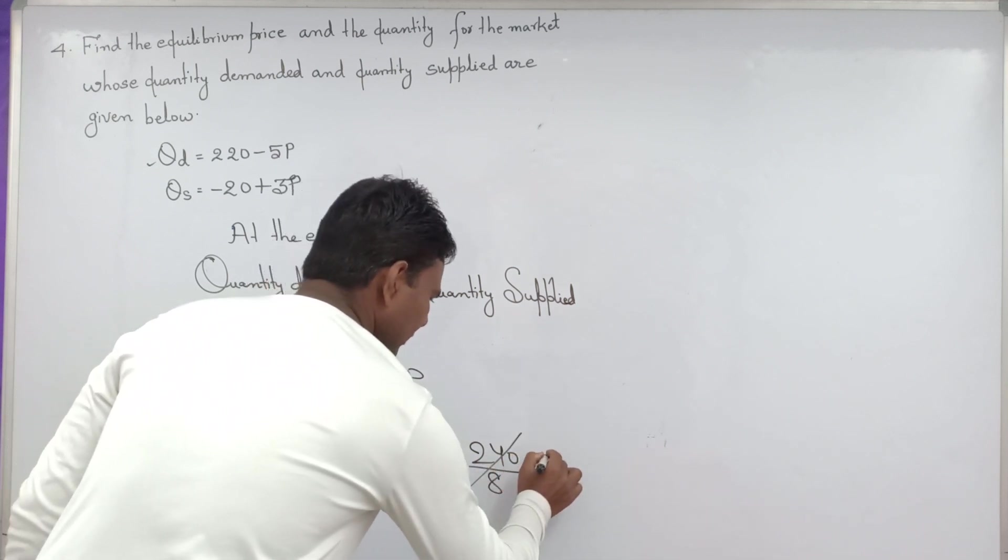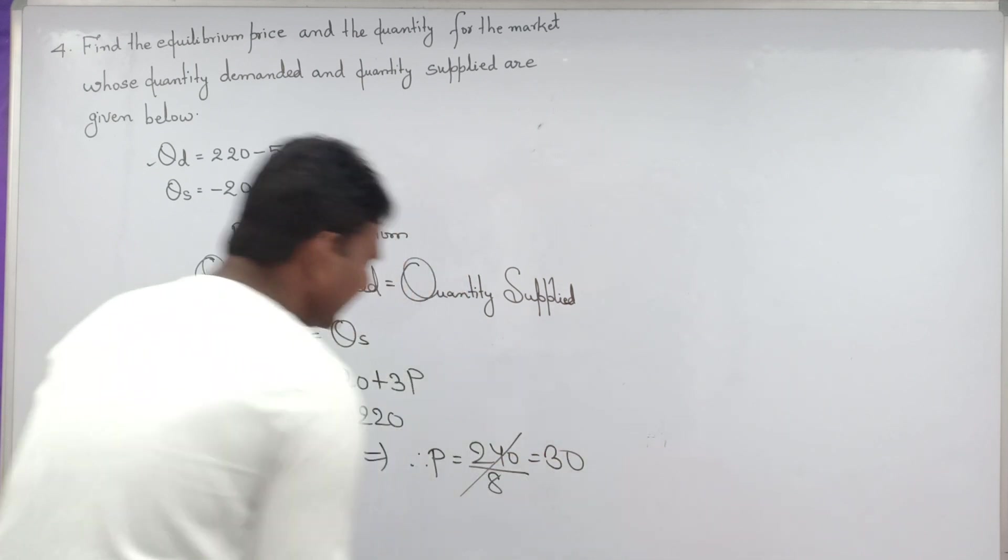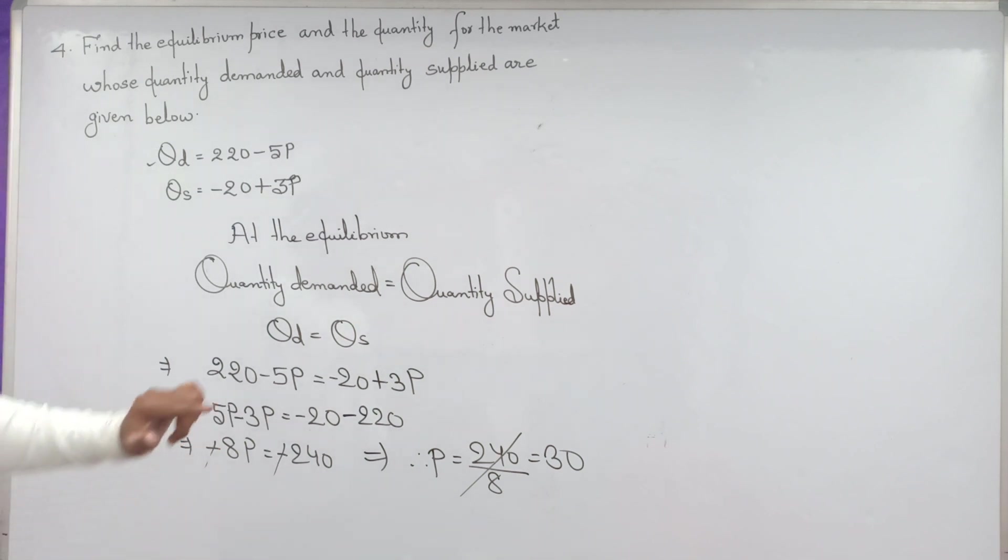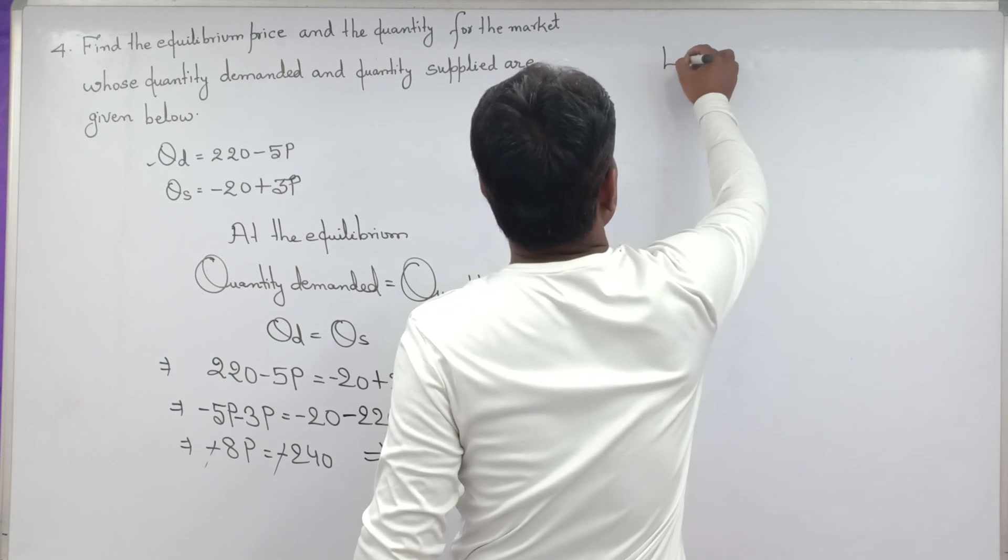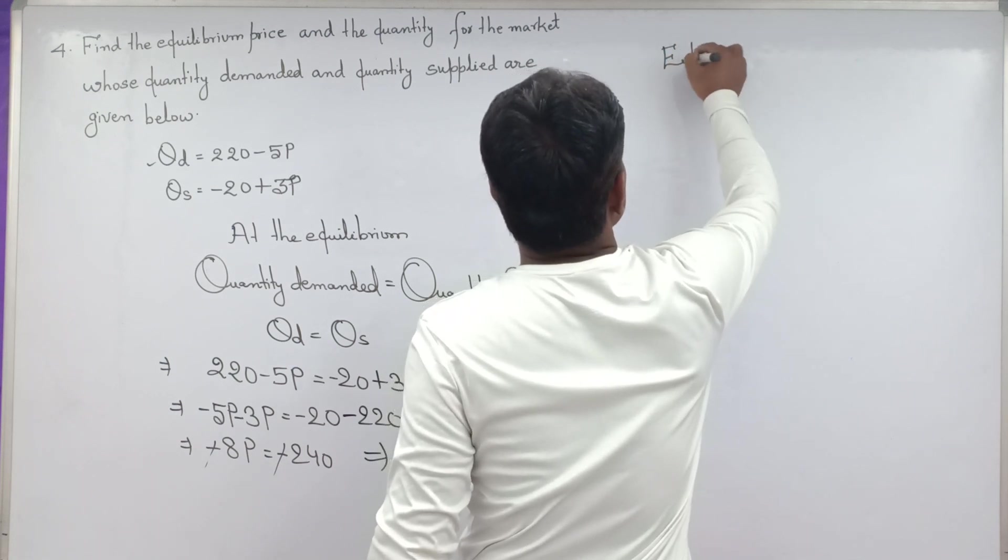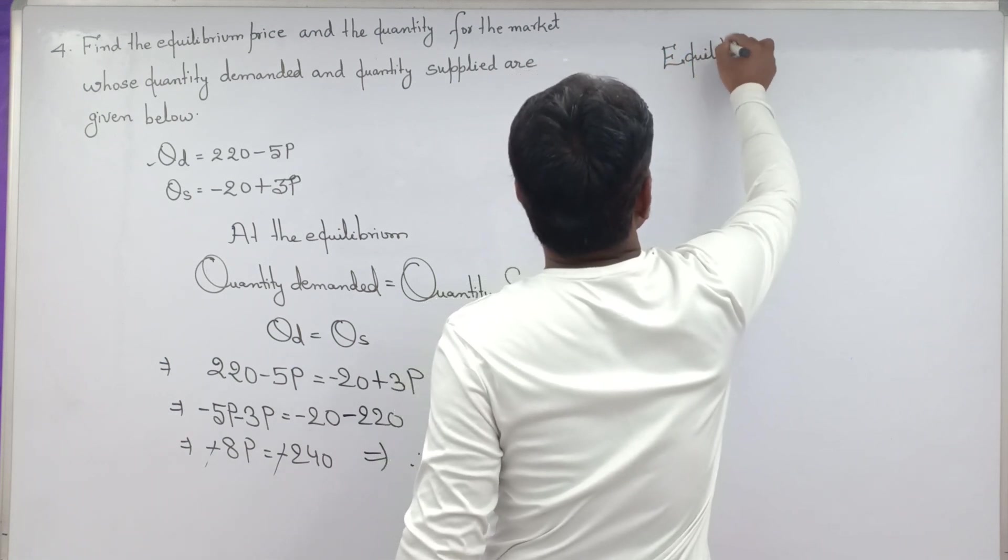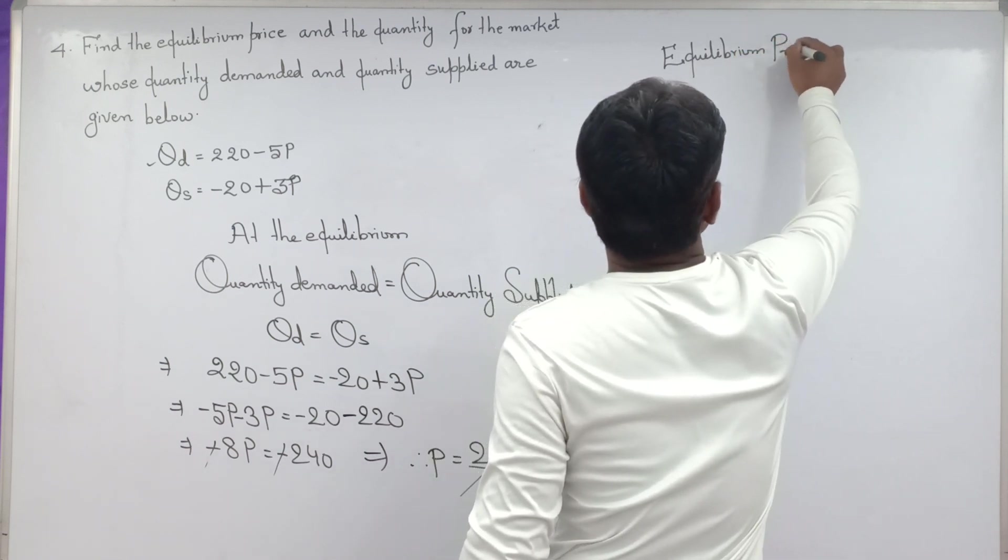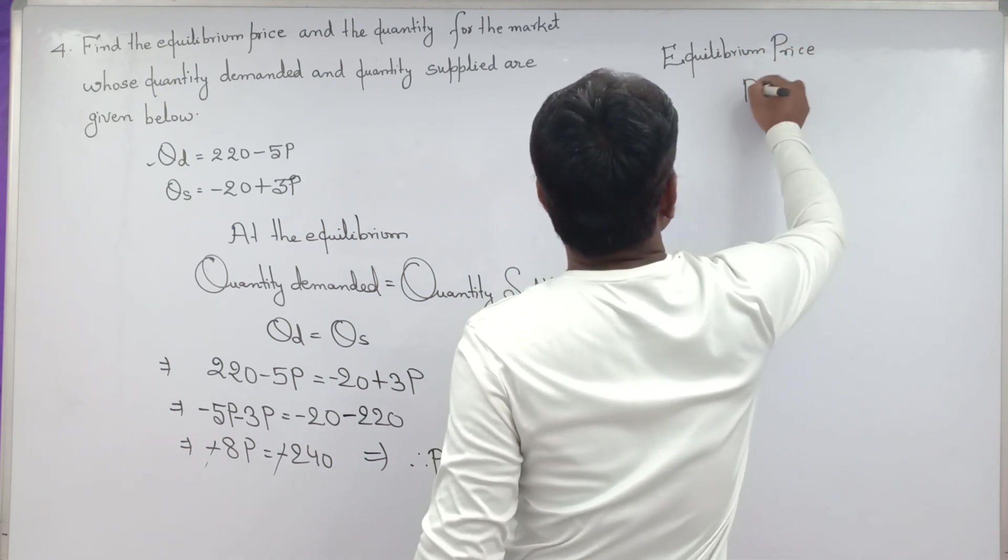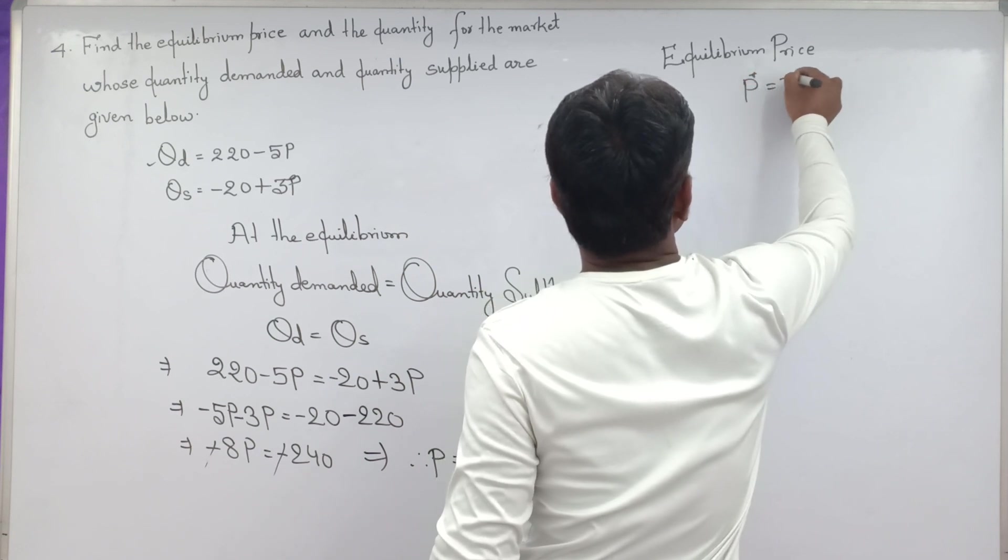Minus minus cancel, P equal to 240 by 8. 8 series are 24. That is, we got equilibrium price equal to 30. Equilibrium price equal to P equal to 30.